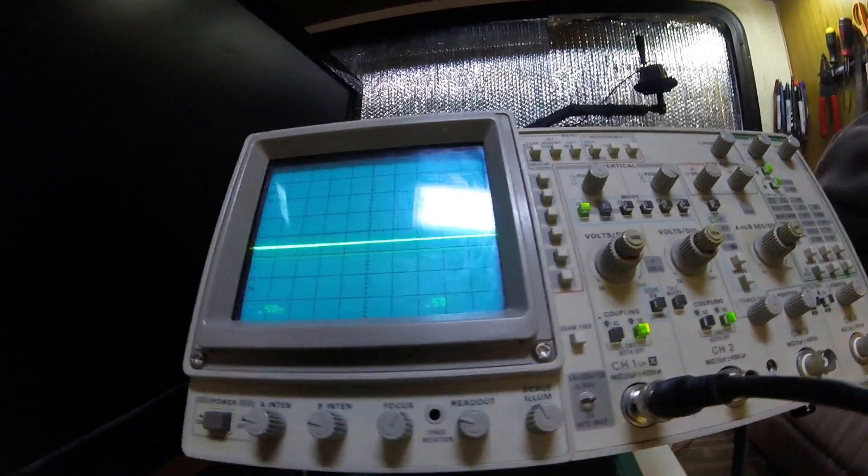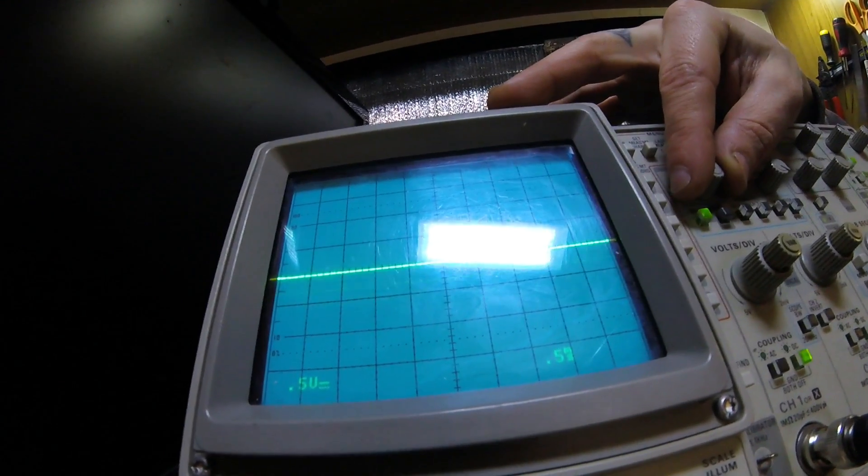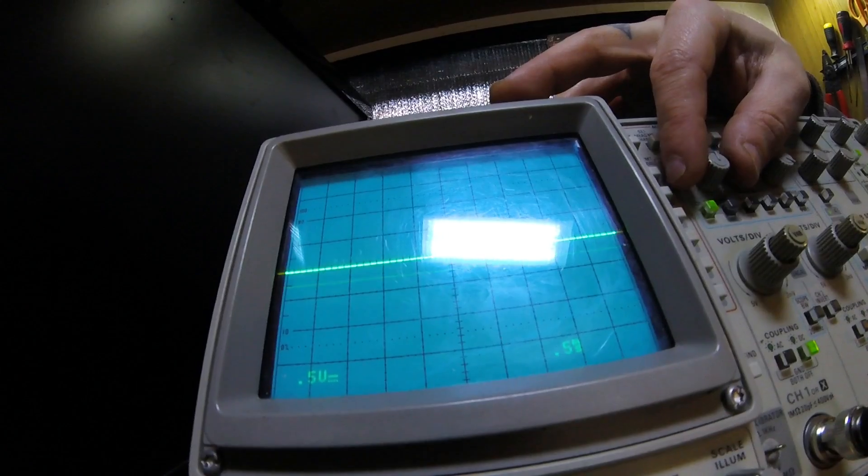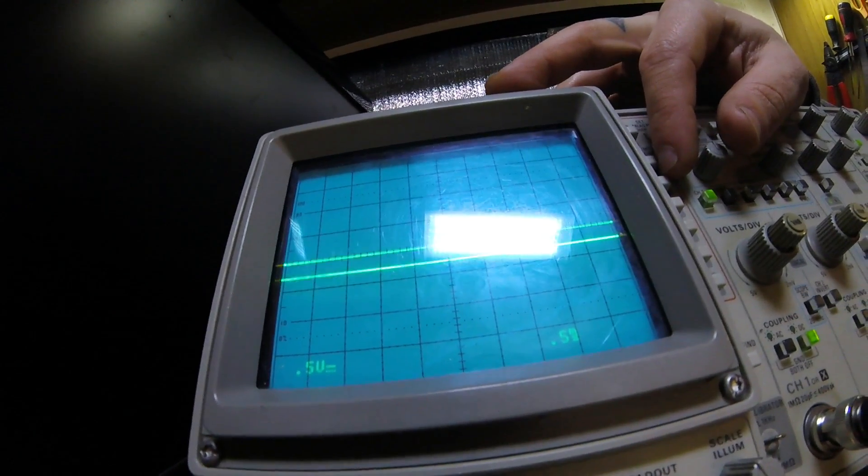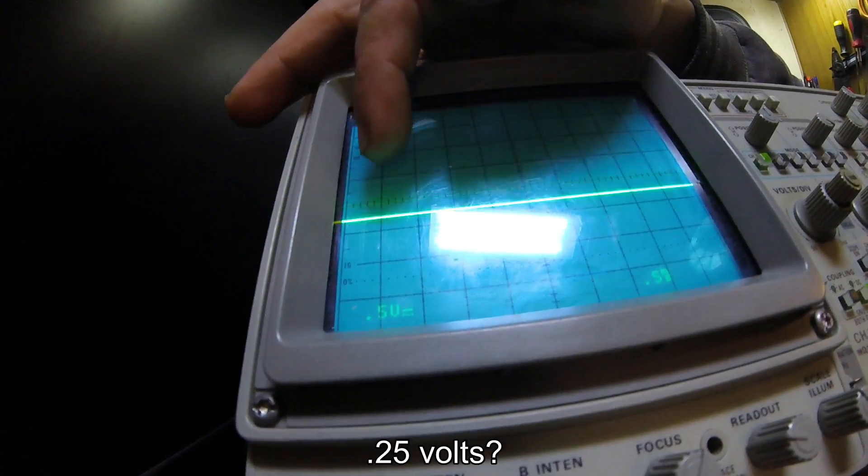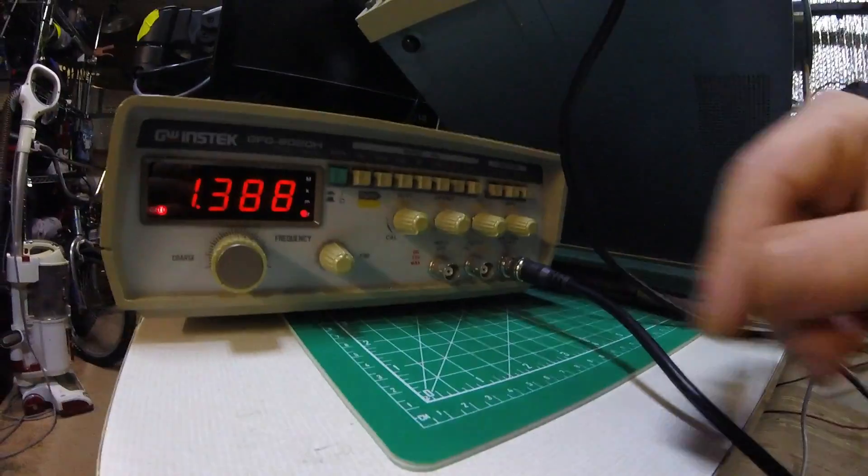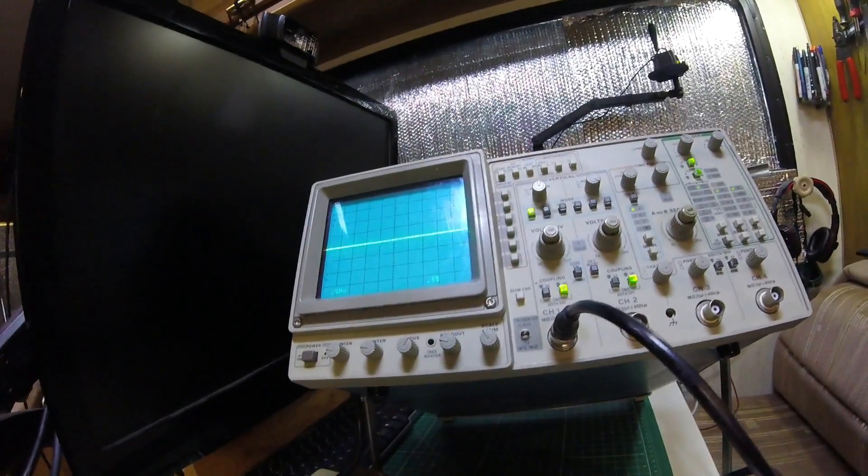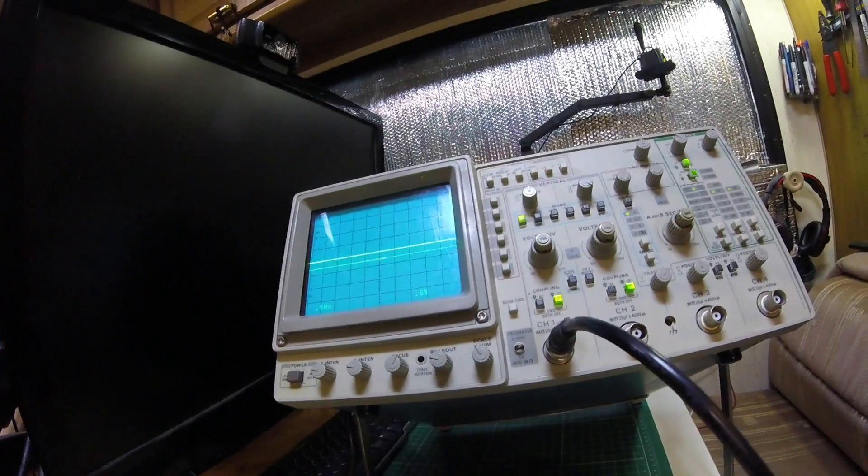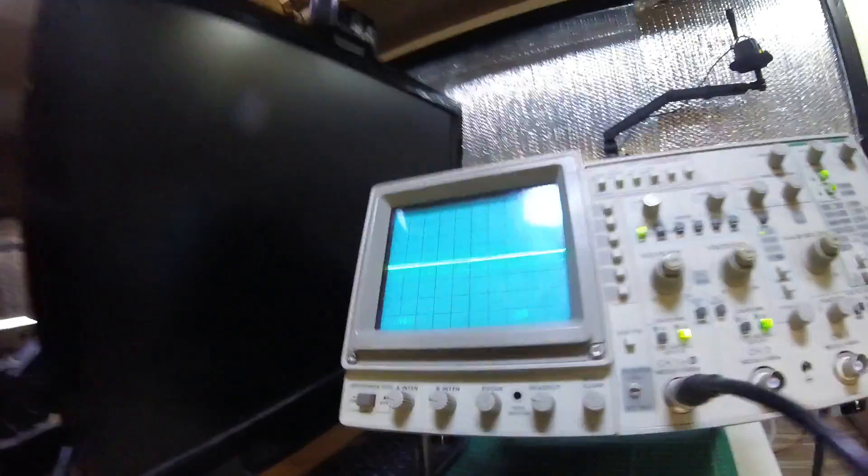It's going up and down from zero volts to whatever that is, two volts. It seems to be off though. I think, right, so that would be zero volts. We're at a point five volt scale. Make it speed up.